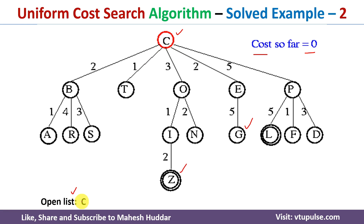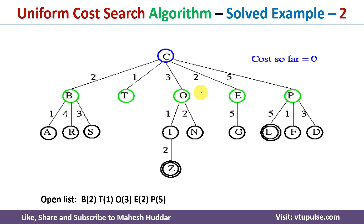We remove this node from the open list and then explore the root node. I will remove C from the open list and find the possible paths. There are multiple paths: C to B, C to D, C to T, C to O, and C to E. For each of them, there will be a different cost.